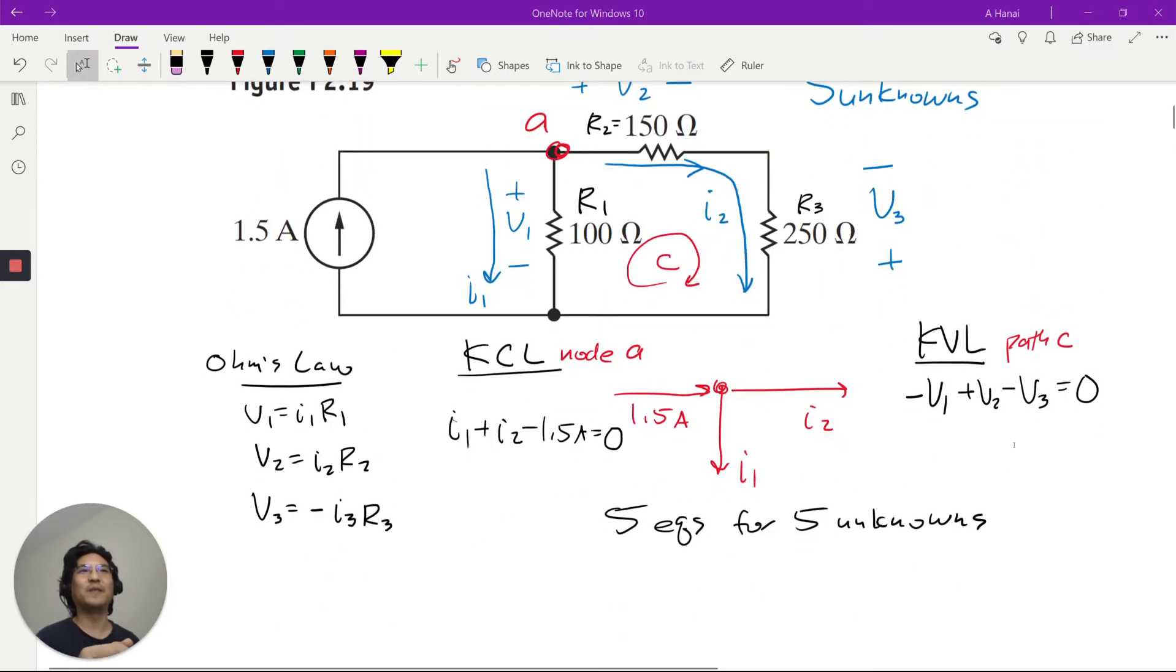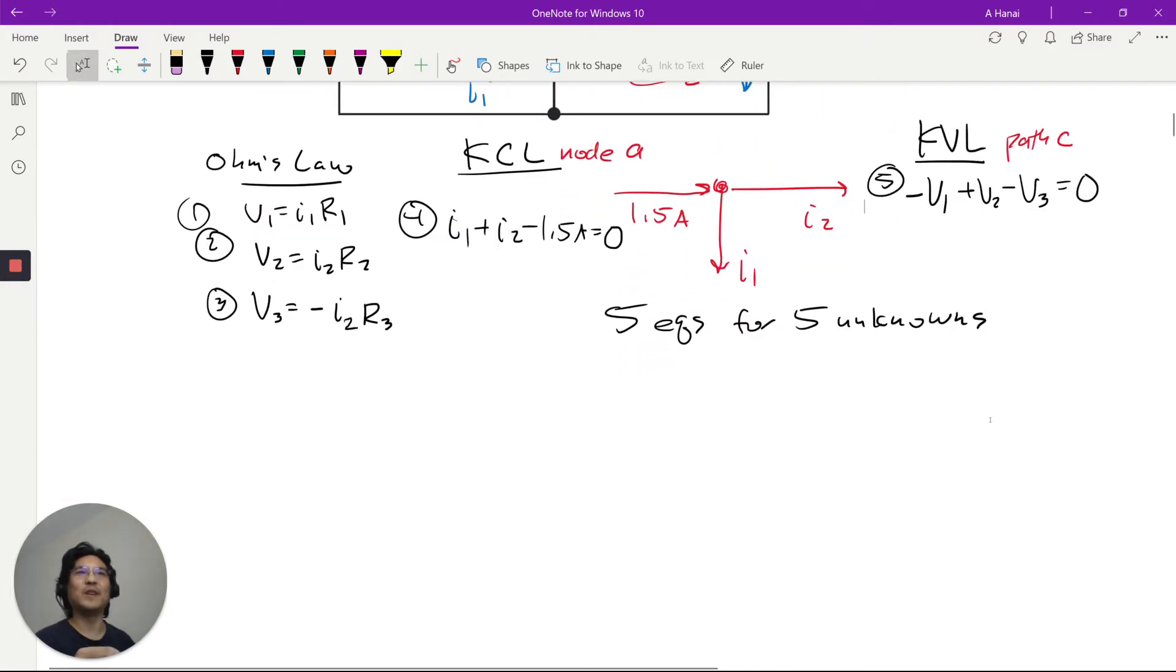we had five equations for five unknowns. This is actually I2, right? I2 and I3 are the same for resistor 2 and resistor 3. So we have these 1, 2, 3, 4, 5 equations. How do we solve five equations for five unknowns?